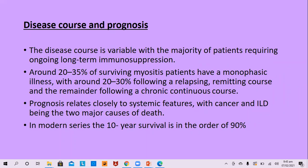The disease course is variable, with the majority of patients requiring ongoing long-term immunosuppression. Around 20–35% of surviving myositis patients have a monophasic illness, 20–30% follow a relapsing-remitting course, and the remainder — about 40–50% — have a chronic continuous course. Prognosis relates closely to systemic features, with cancer and inflammatory lung disease being the two major causes of death. The 10-year survival is in the range of 90%.